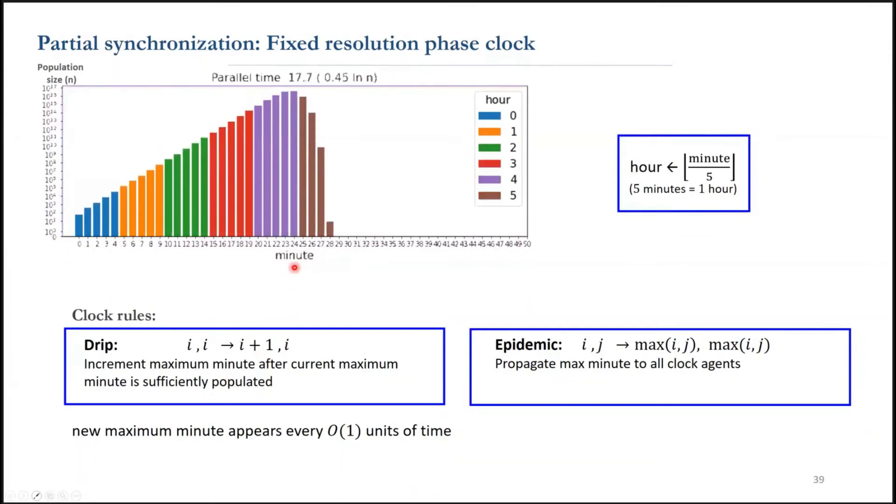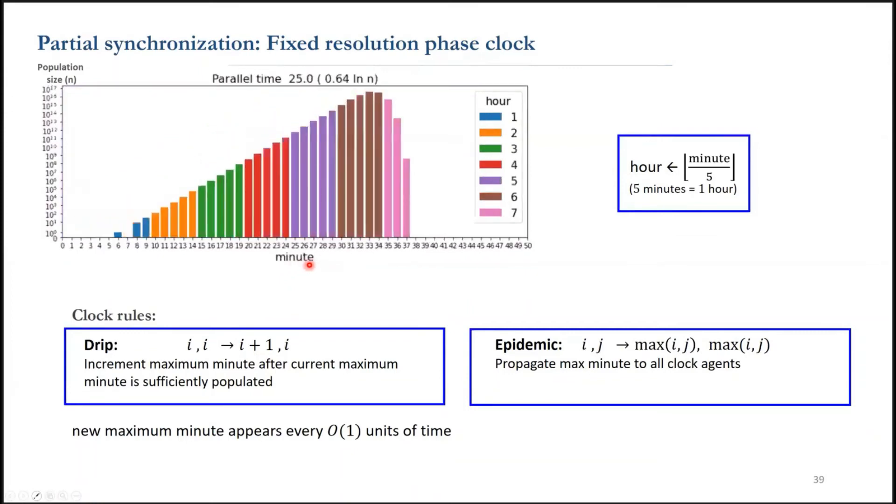We know that the epidemic part takes log n time to reach out the whole population. So we cannot expect that all agents are synchronized together. But most agents in the population are synchronized.